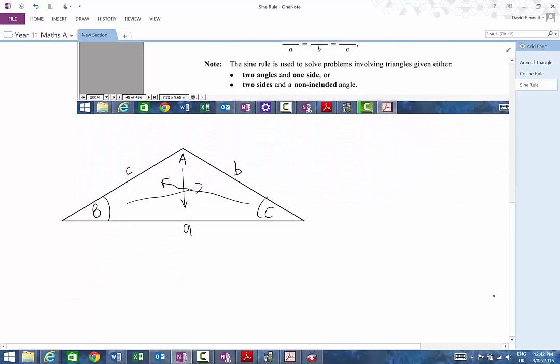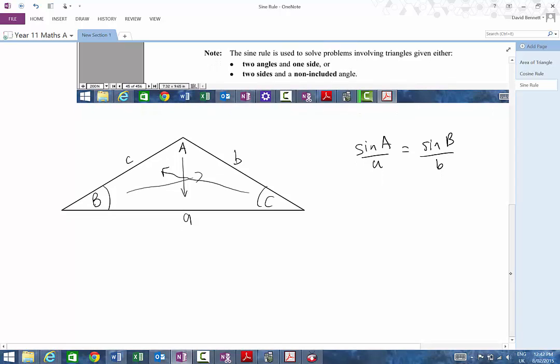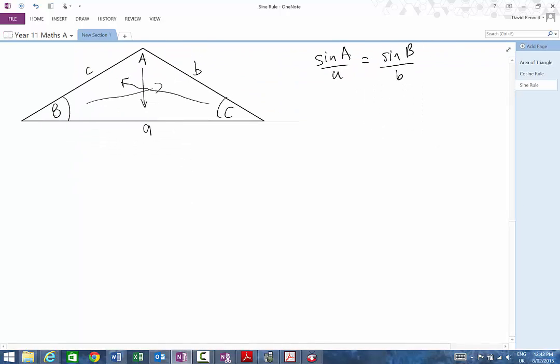Now, we're only ever going to do two of these sides. So I could say sine of A to A is equal to sine of B as to B. That's the relationship we're going to do. Probably the easiest way to show you this is to actually do a question.